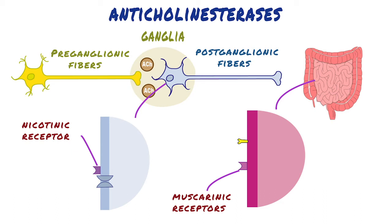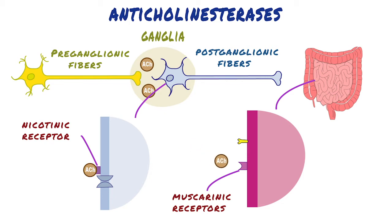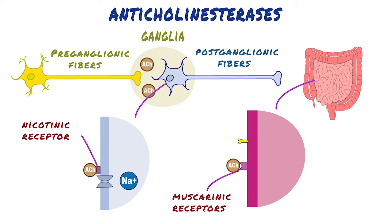Thus, acetylcholine released from pre-ganglionic neurons of the parasympathetic division activates nicotinic receptors, whereas acetylcholine released from postganglionic neurons of the parasympathetic division activates muscarinic receptors. The nicotinic receptor is composed of five subunits and it functions as a ligand-gated ion channel. Binding of acetylcholine molecules elicits a conformational change that allows the entry of sodium ions, resulting in the depolarization of the effector cell.